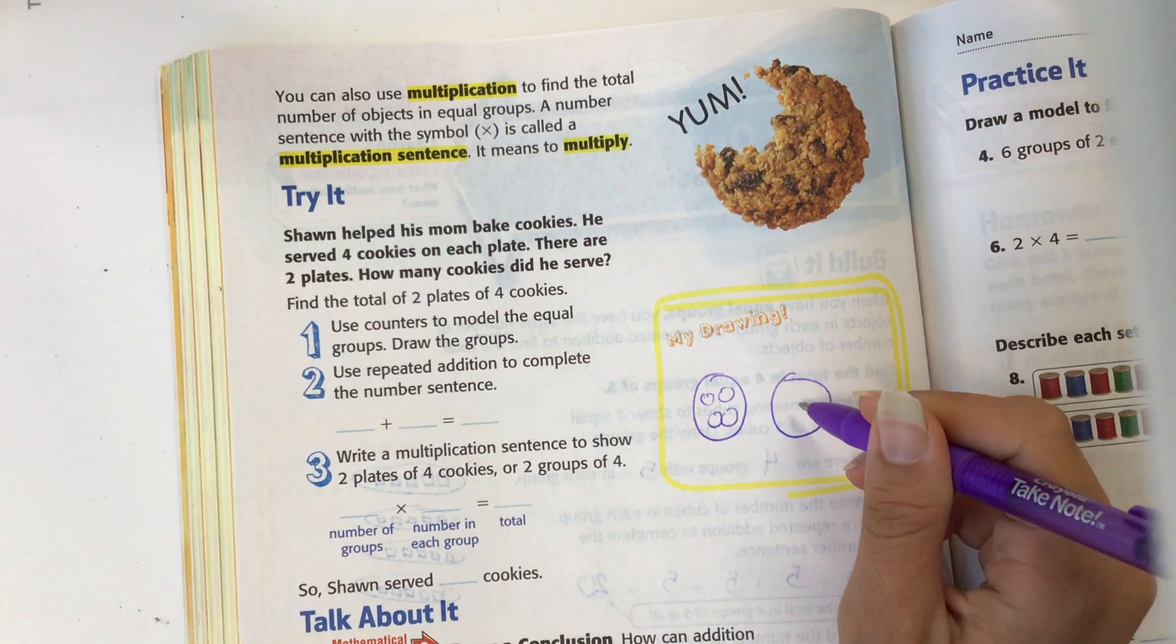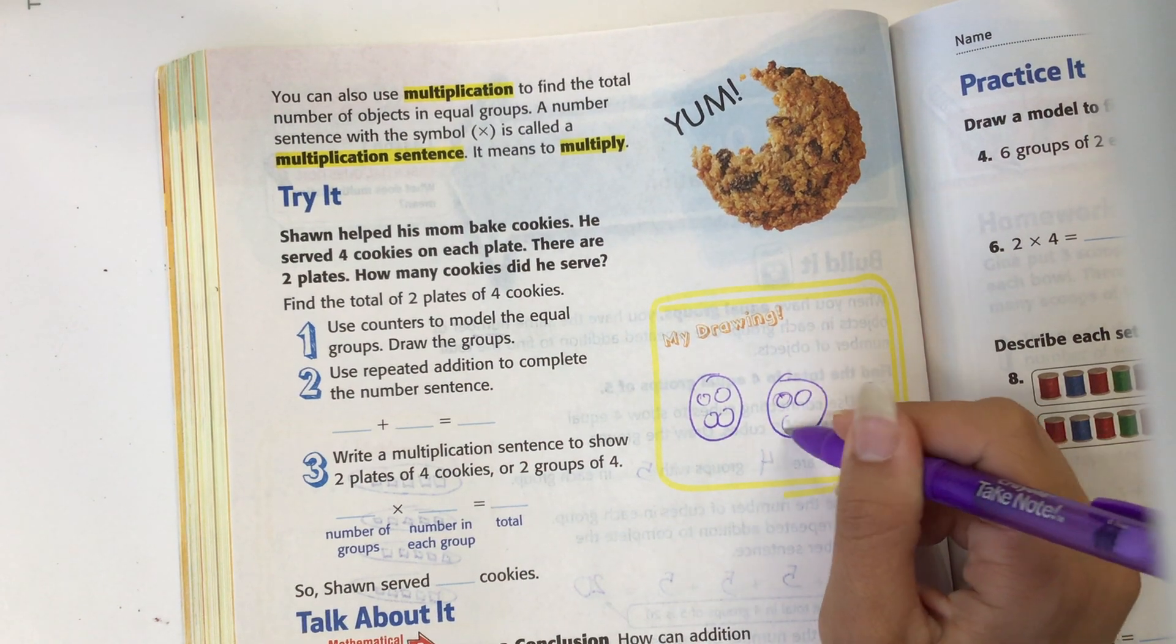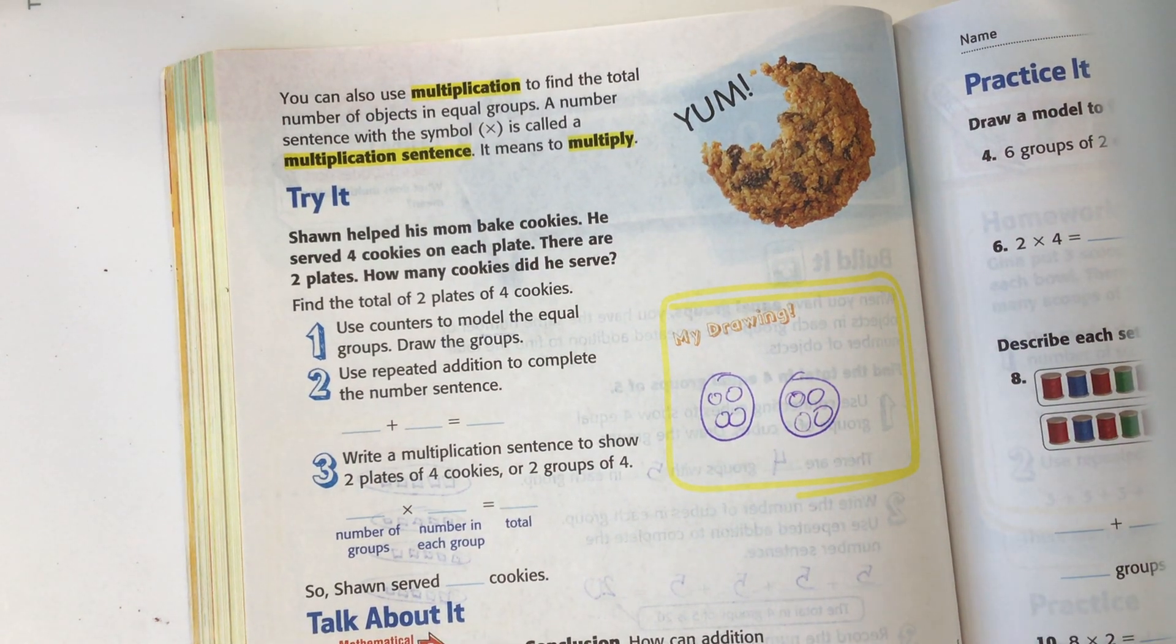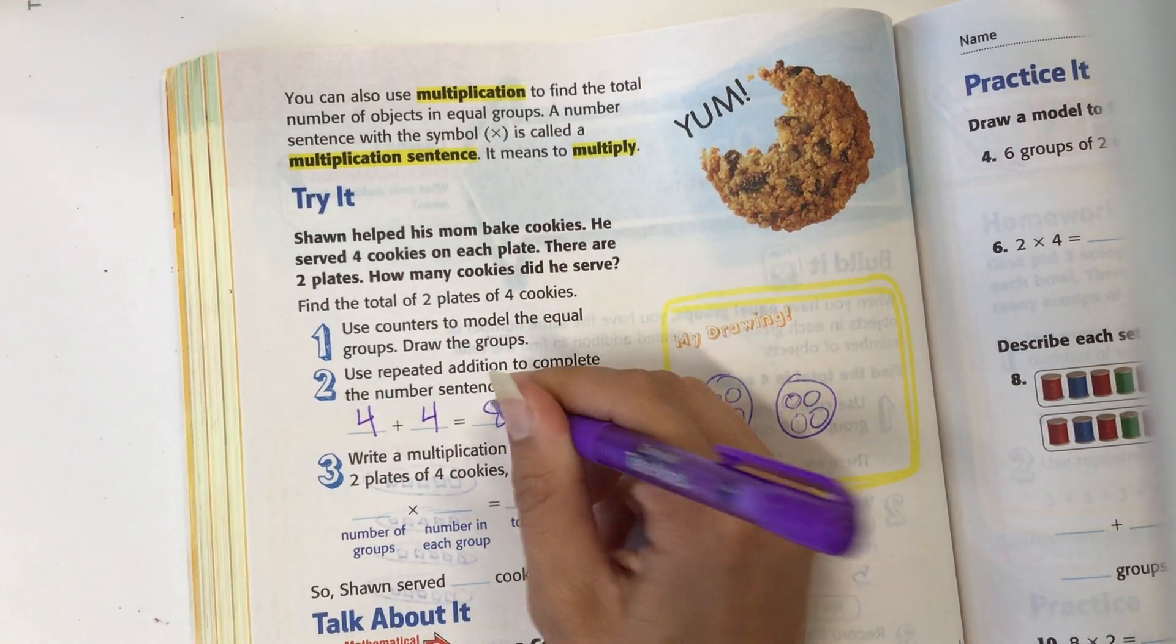One, two, three, four on that plate, and it says four cookies on each plate. So he also has four cookies on this plate too. Draw a number sentence, a repeated addition. So it's four plus four equals eight.